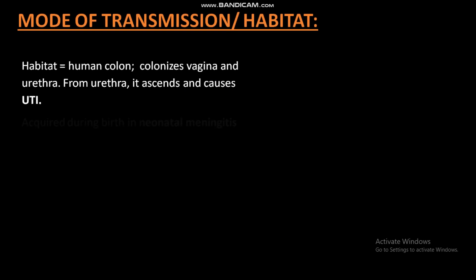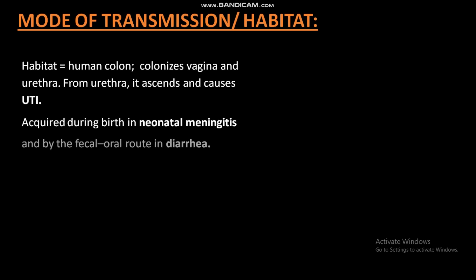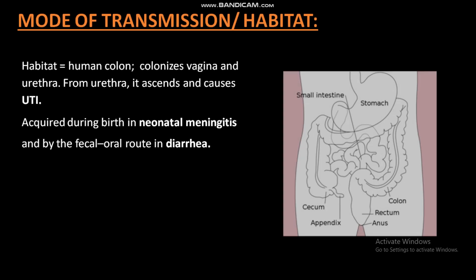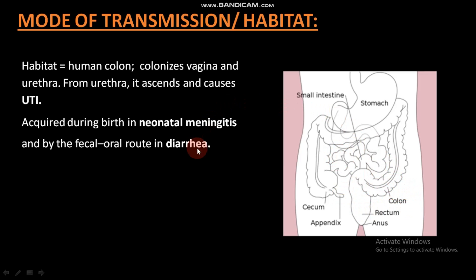The habitat and mode of transmission of E. coli bacteria: they are commonly found in the human colon, small intestine, urethra, and vagina. They are also transmitted from mother to the fetus and cause neonatal meningitis.